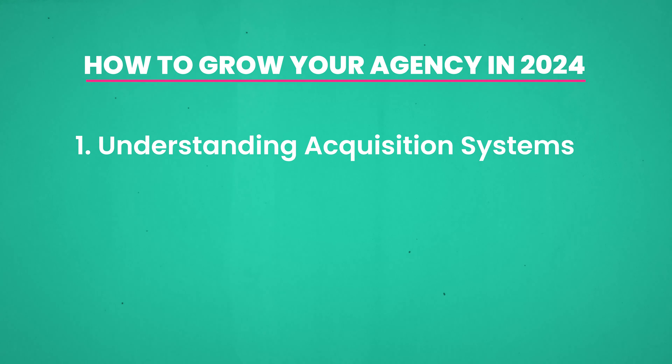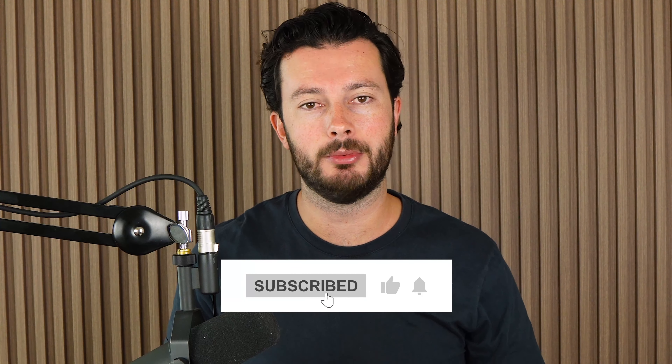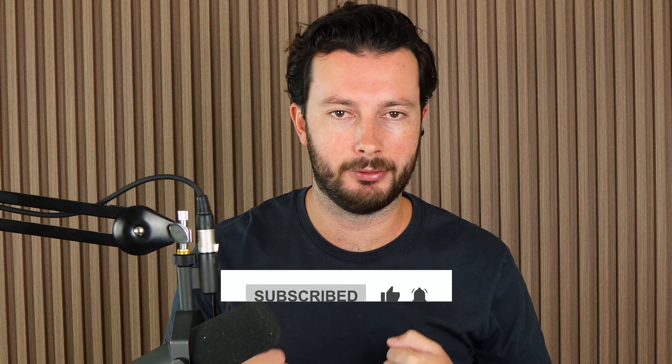The first one is all around remembering to understand what an acquisition system is. It sounds really bizarre but it's something I've started to think about a lot more and we've started to teach our clients a lot more, and it's really made a big difference. It's about understanding what a client acquisition system actually looks like, because when you can see it, it makes operating it a lot easier — it's ultimately a machine, and if you don't know what the machine is, making it work is pretty difficult.